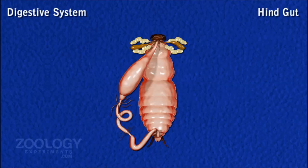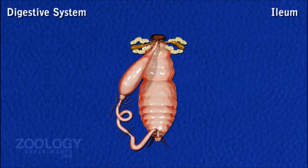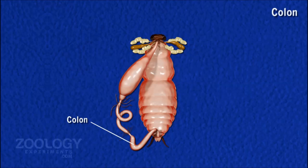Hindgut. The posterior one-third part of the alimentary canal forms the hindgut. It is divided into three regions: ileum, colon, and rectum. The ileum is a narrow and short tube, and its posterior end is characterized by the possession of six tiny triangular lobes internally bearing spicules, acting as a sort of sphincter.